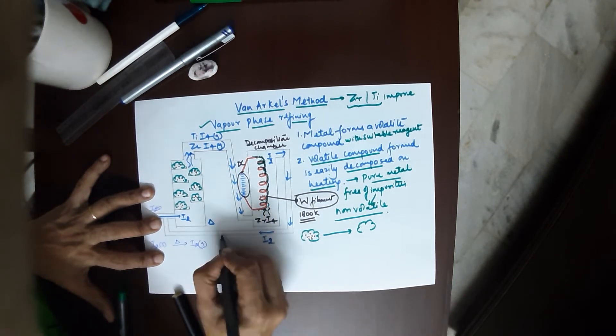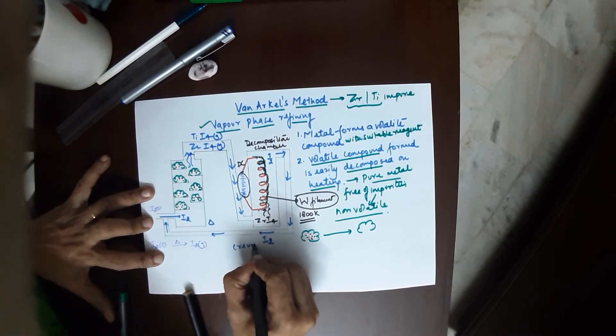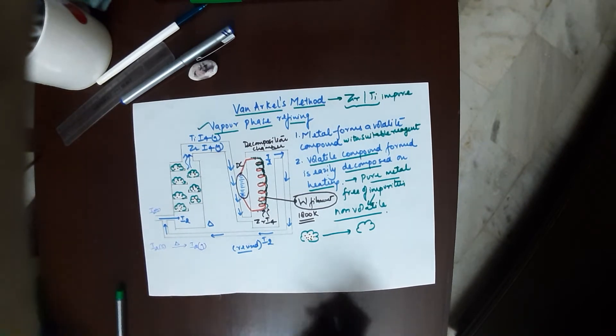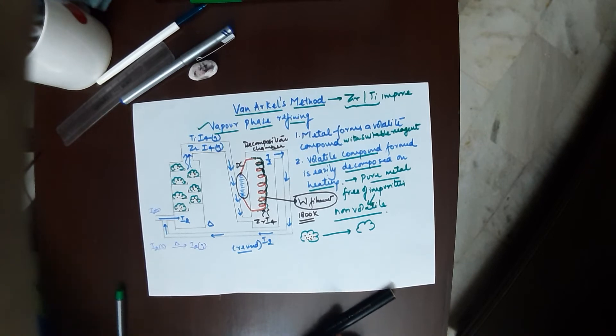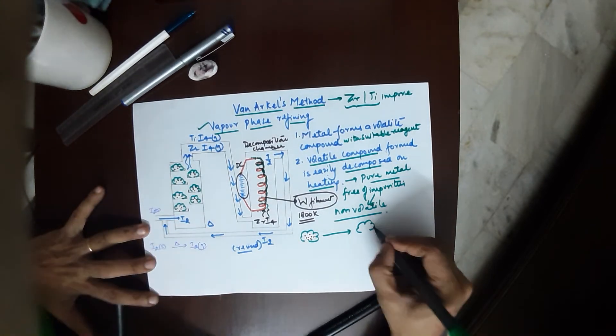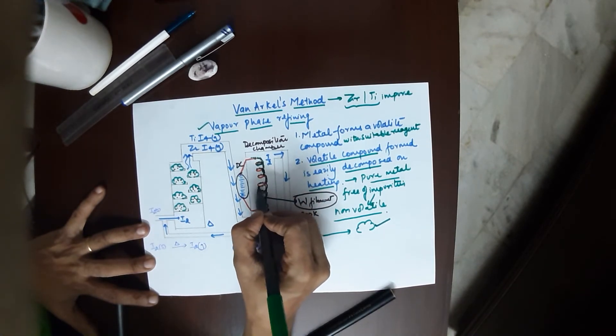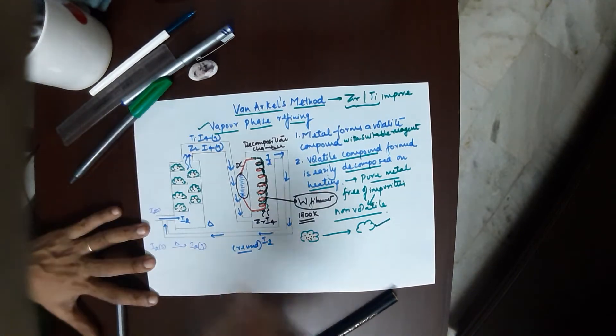The iodine gas liberated in the second chamber is for reusage. Here in the second chamber, where it is getting decomposed, you get your pure titanium or zirconium coated over the tungsten filament, which is to be scraped off. The reactions of this particular process are as follows.